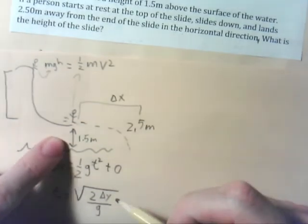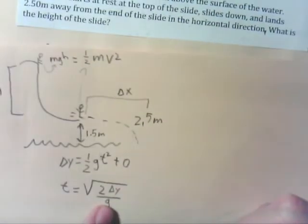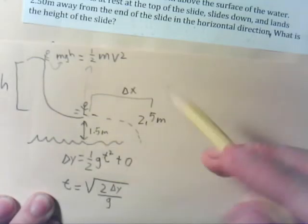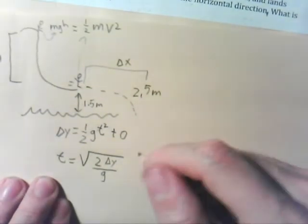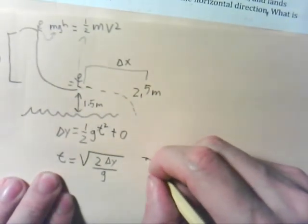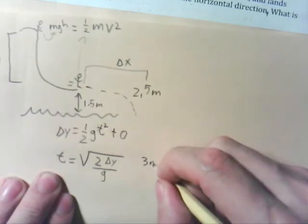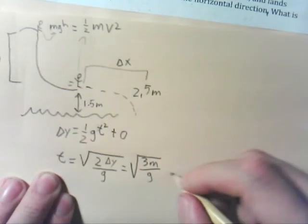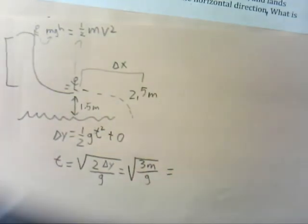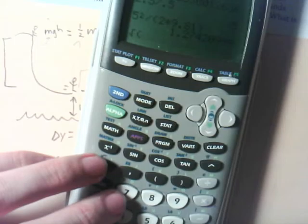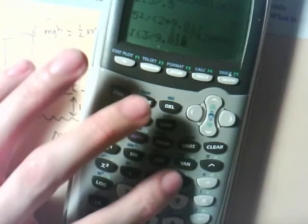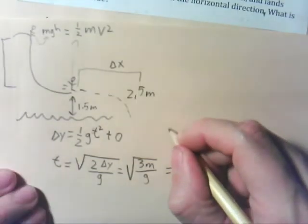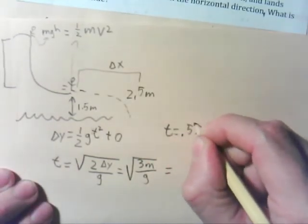So we get that t equals the square root of 2 delta y over g. Great. Okay, so delta y, remember, is 1.5 meters, g is 9.8, and we can solve for time. So 2 times 1.5 is 3 meters over g, and square root that. So square root of 3 divided by 9.81 gives us 0.553. So t equals 0.55 seconds.